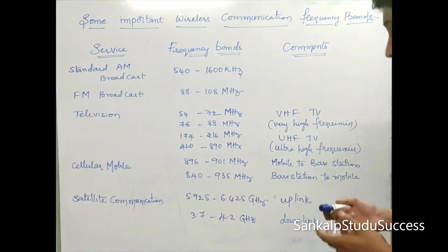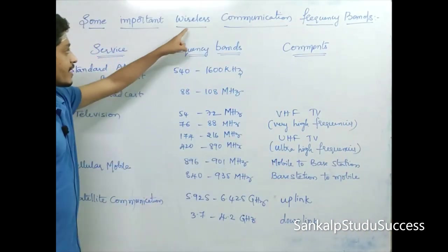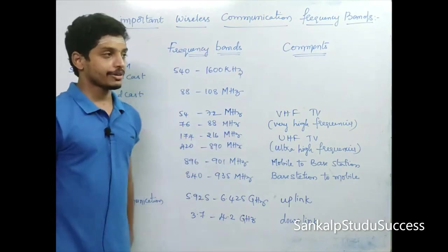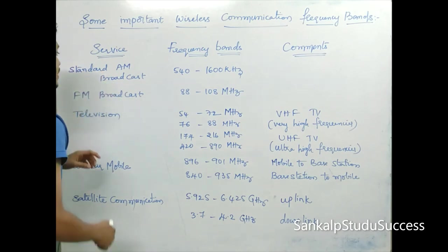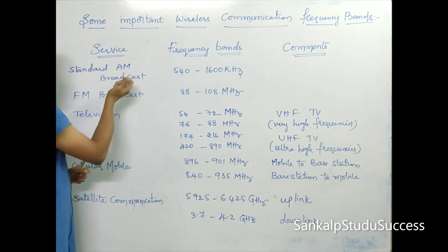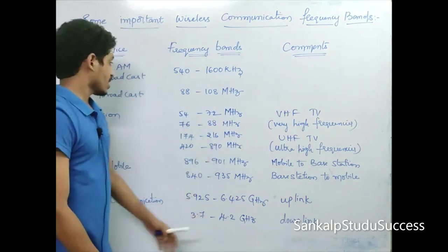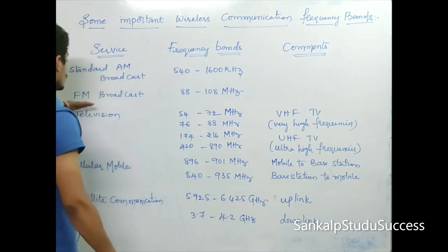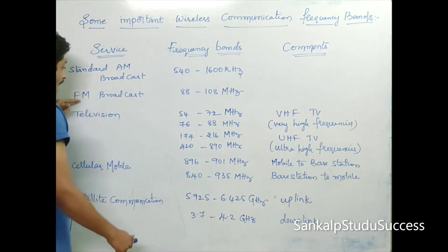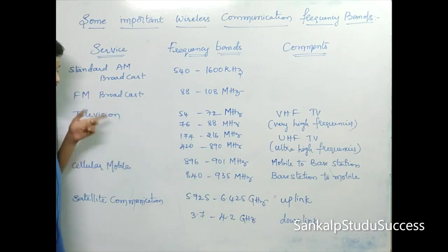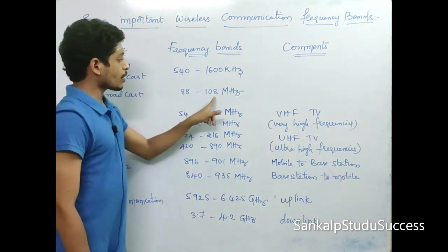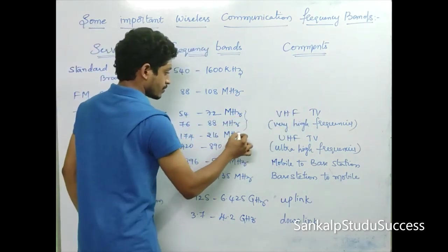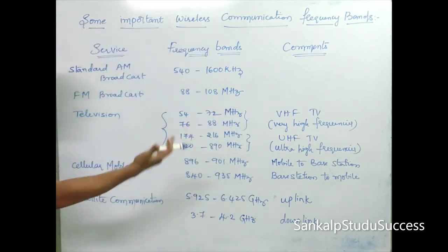Now let us see some important wireless communication frequency bands. For free space transmission media, certain services are allocated specific frequency bands. Standard AM broadcast uses amplitude modulation for broadcasting, operating in the frequency band up to 1600 kHz. FM, which is frequency modulation broadcast, operates in the 88 to 108 MHz frequency band.